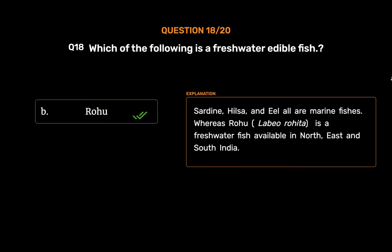Sardine, Hilsa, and Eel are marine fishes. Whereas Rohu (Labeo rohita) is a freshwater fish available in North, East, and South India.